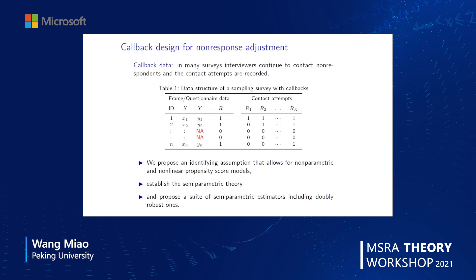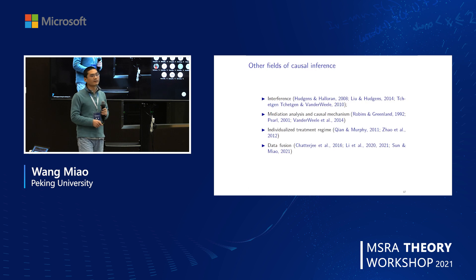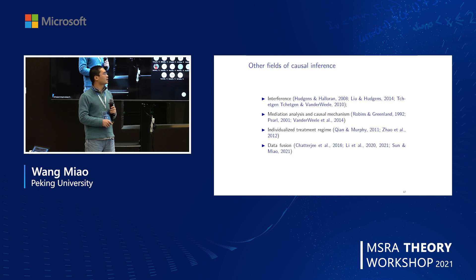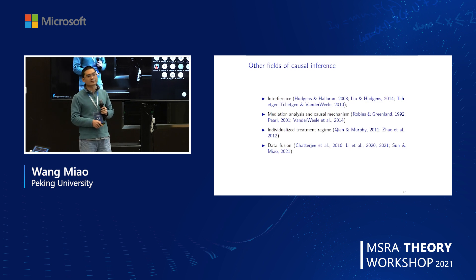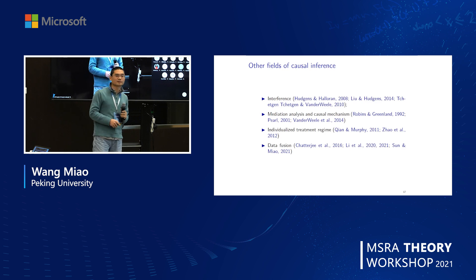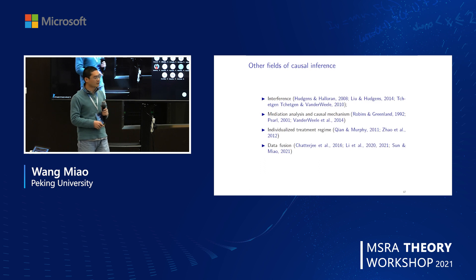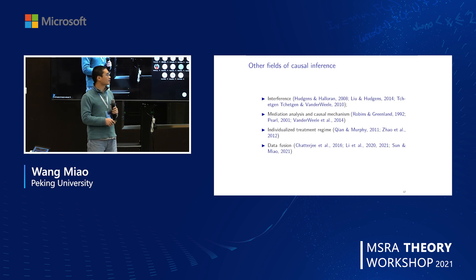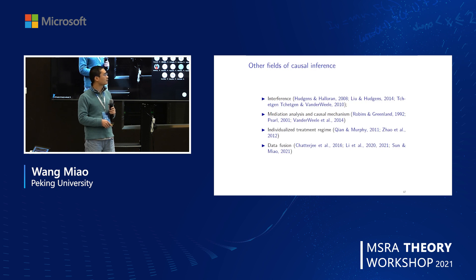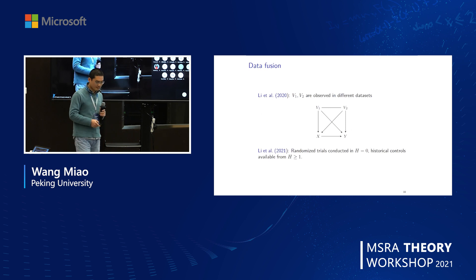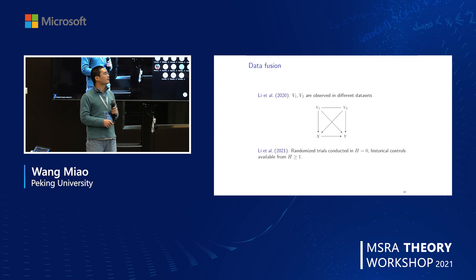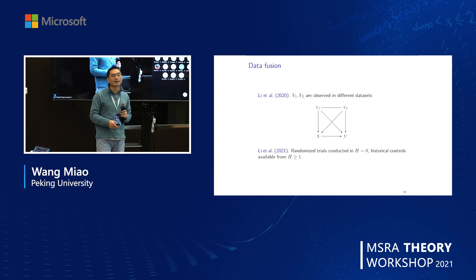We proposed an identification and semi-parametric inference framework for using callback data for non-response adjustment. Beyond confounding and missing data, causal inference concerns a broader area of problems including interference. Interference plays a key role in vaccine studies because a vaccine protects not only the person who takes it but also the people around them — making it very important for vaccine policy. Other problems include mediation analysis and causal mechanism, individualized treatment regimes, and data fusion. In recent work, we study causal inference with multi-source datasets, where different variables are observed in different datasets and can be combined for better causal inference.